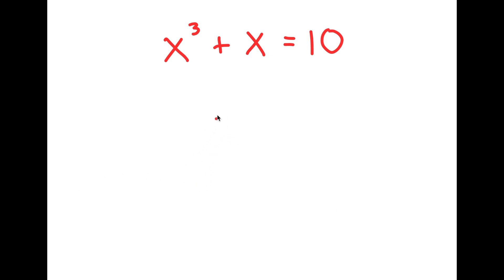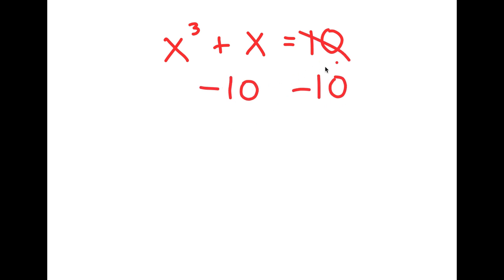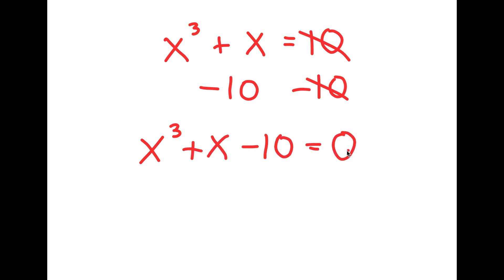In this problem, I have x to the power of 3 plus x is equal to 10. To solve this, I'm going to first start by subtracting 10 on both sides. If I subtract 10 on both sides, these two cancel out, and I get x to the power of 3 plus x minus 10 is equal to 0.